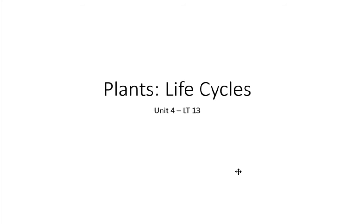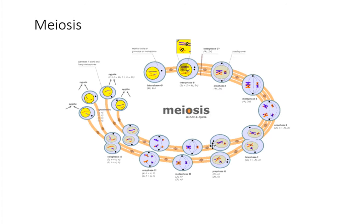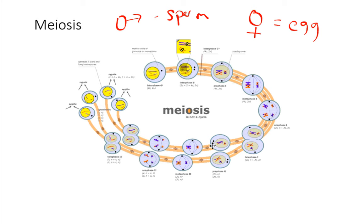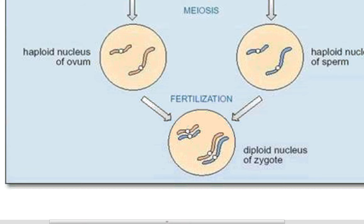This video is learning target 13 of unit 4 on plant life cycles. A couple terms we need to review: meiosis is the production of haploid cells. These cells are called gametes or sex cells. For plants, the male gamete is the sperm cell and the female gamete is the egg cell. These gametes can combine to form a zygote, which is diploid, and this process is called fertilization.